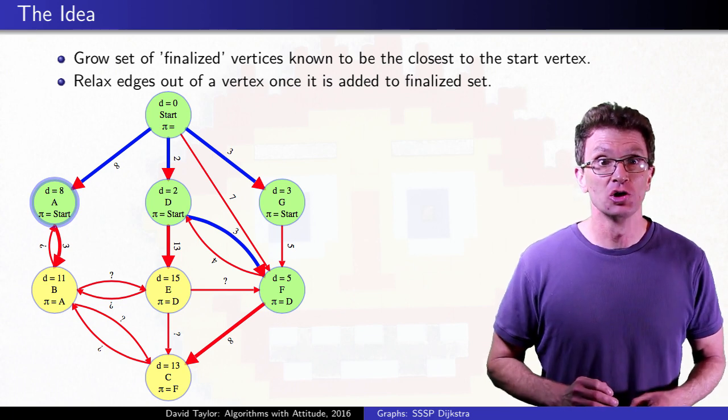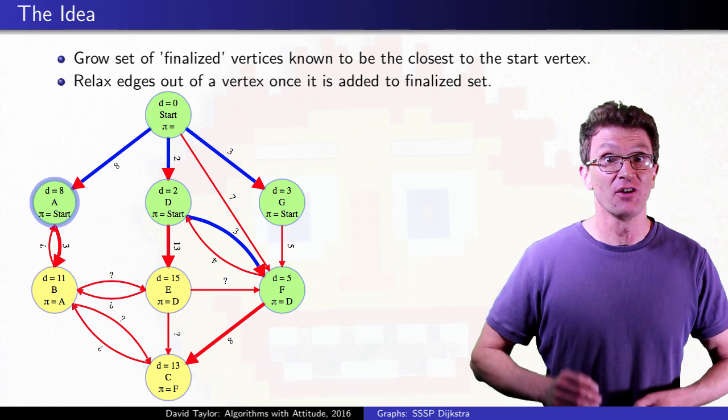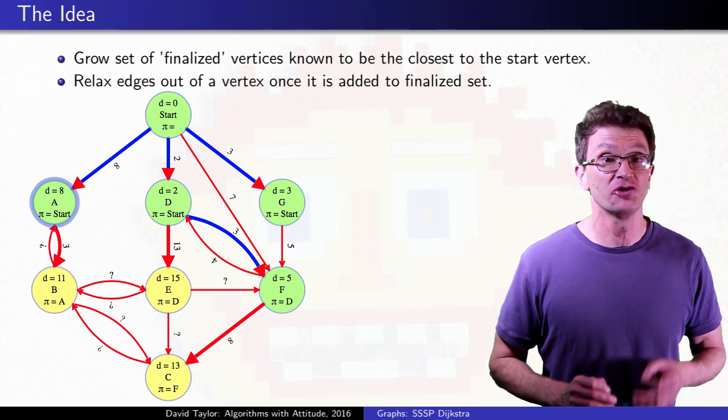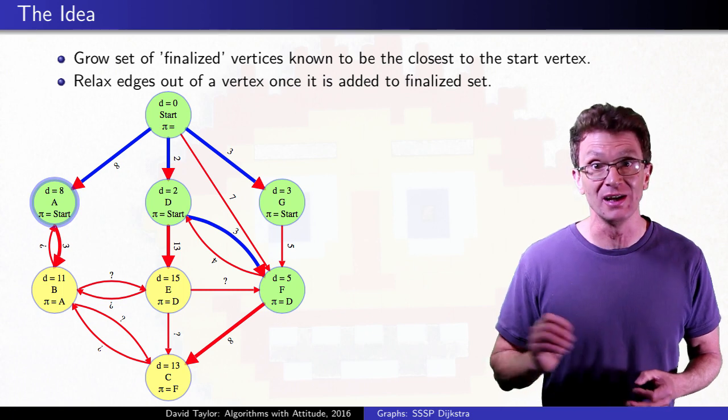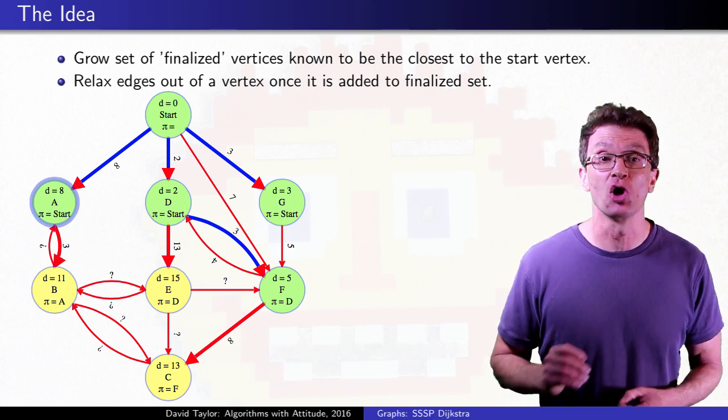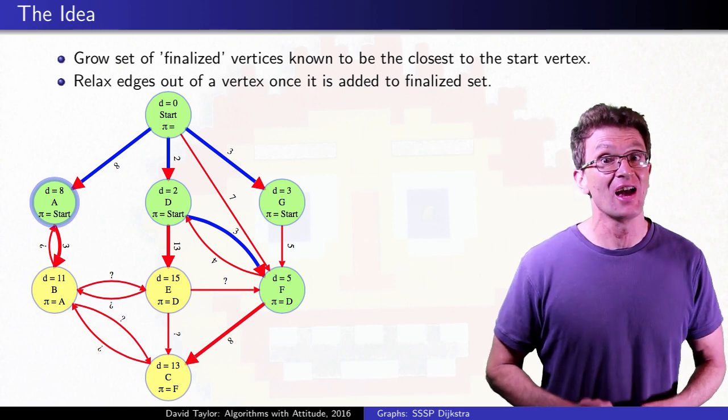In this weighted graph, you are looking for shortest paths from the start, and in this graph the five closest vertices are start, D, G, F, and A, with the shortest distance shown in each vertex and paths shown in blue. Of those, A is the farthest distance at 8.